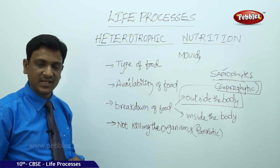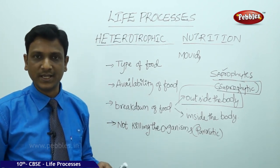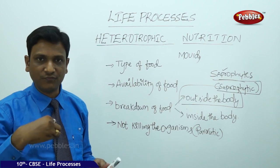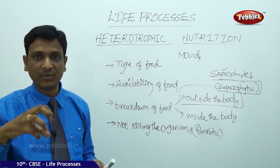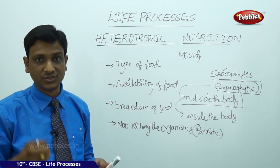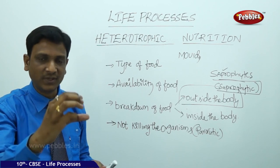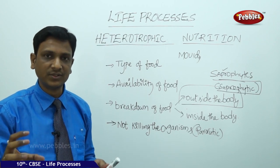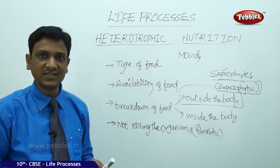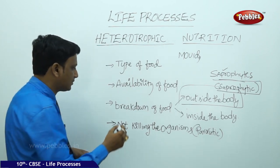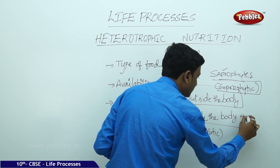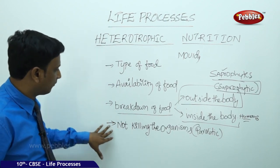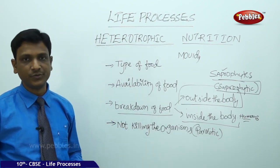Animals like cats, dogs, humans, birds, and reptiles eat food, and after eating it the food is digested in the stomach with the help of enzymes. These enzymes convert the food from complex form to simple form. The simple nutrients are then absorbed into the blood, supplied to cells, and used for maintenance, growth, and various activities of the organism. This is breakdown of food inside the body.